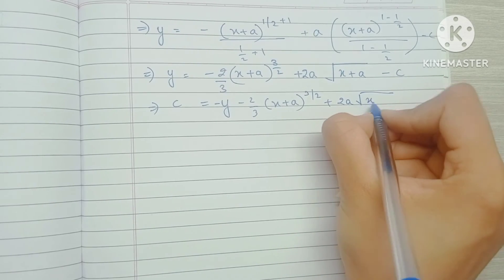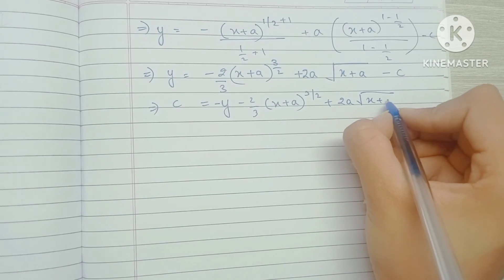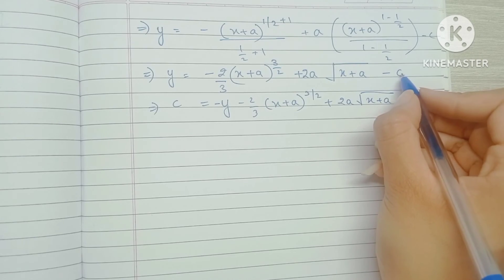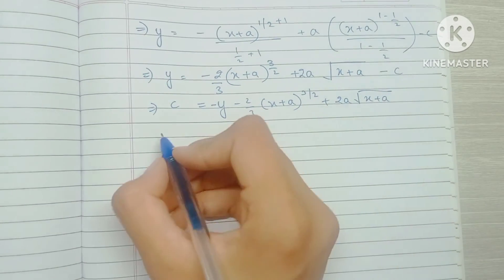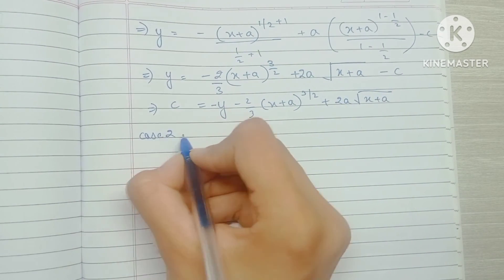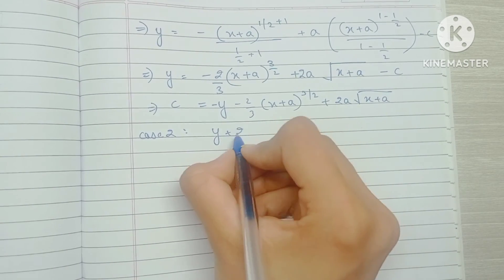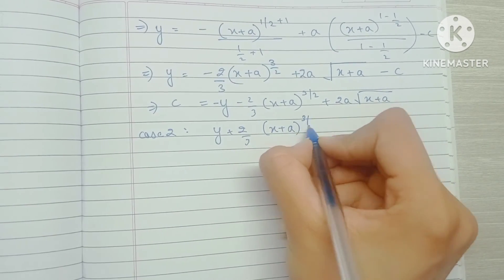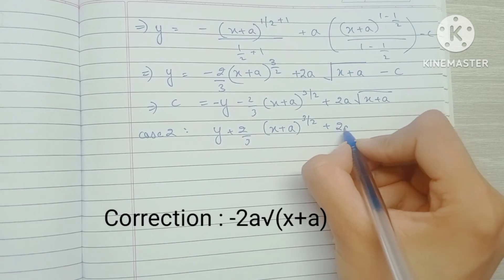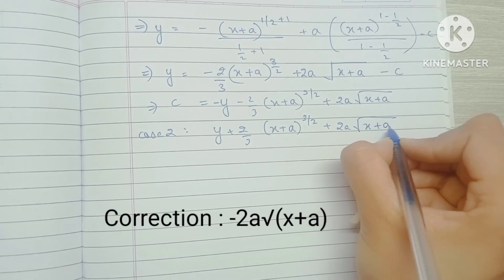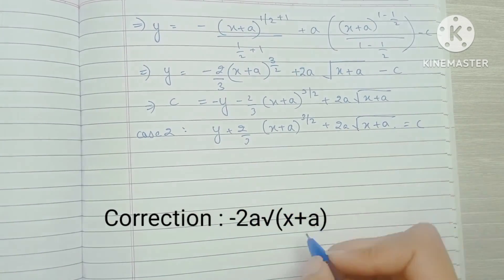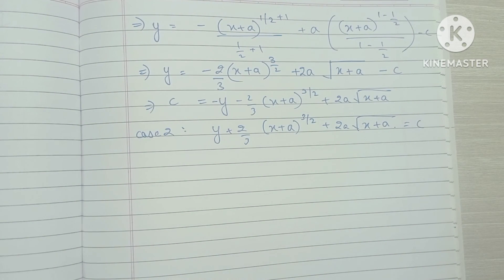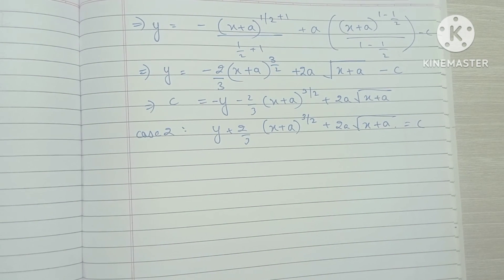Bringing C to the left side, the final answer is: y − (2/3)(x+a)^(3/2) + 2a√(x+a) = C. Note: if you had used +C instead of −C, the answer would be y + (2/3)(x+a)^(3/2) + 2a√(x+a) = C — both forms are fine since the constant is arbitrary. That's it for this video!